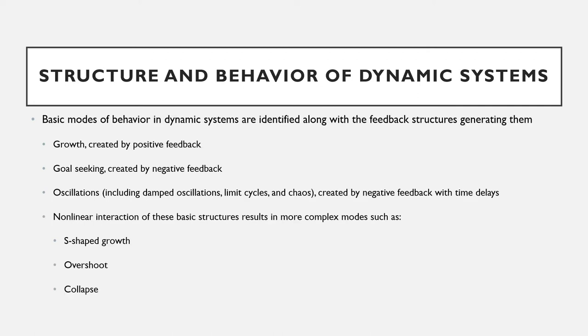This section provides an overview of dynamics focusing on the relationship between structure and behavior. The basic modes of behavior in dynamic systems are identified along with the feedback structures generating them. These modes include growth created by positive feedback, goal-seeking created by negative feedback, and oscillations.